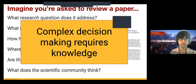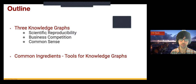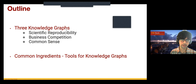Today I'm going to talk about problems that require lots of knowledge to make complex decisions, motivated through three knowledge graphs. The first tackles scientific reproducibility. The second is about competition in business — how a struggling entrepreneur can use knowledge to get a leg up on the competition. And the last knowledge graph will be common sense — the sorts of ideas you and I take for granted but AI models are still trying to understand.